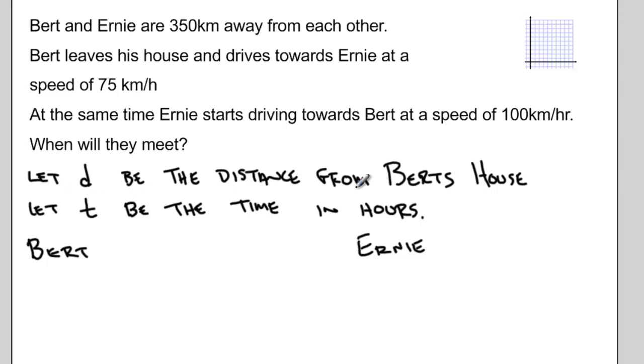D represents the distance from Bert's house. Bert starts at his house, so when we start our timer, Bert's distance equals his speed multiplied by time. Bert's equation is D = 75t.